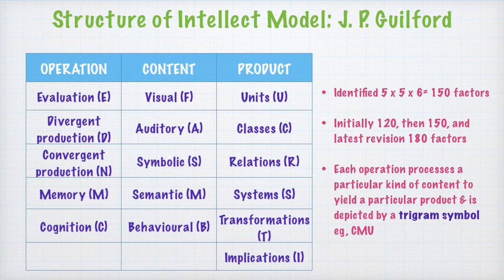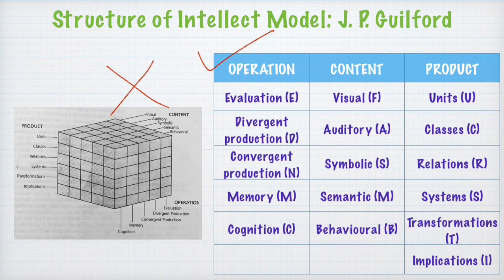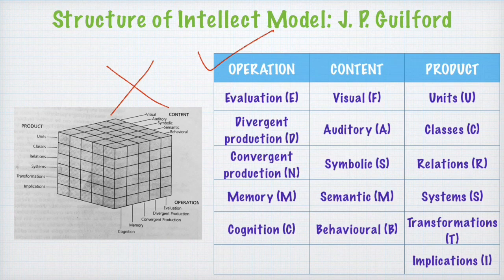For example, if we are given a list of words and for each word we have to find a synonym from five given options, we are applying cognition to a semantic unit — hence the trigram symbol CMU: C for cognition, M for semantic, U for unit. For the purpose of examination, you do not need to draw the diagram in your answer script. You just have to list the contents, products, and operations with all bullet points and important highlighted points. That suffices for a good answer on the Structure of Intellect model.